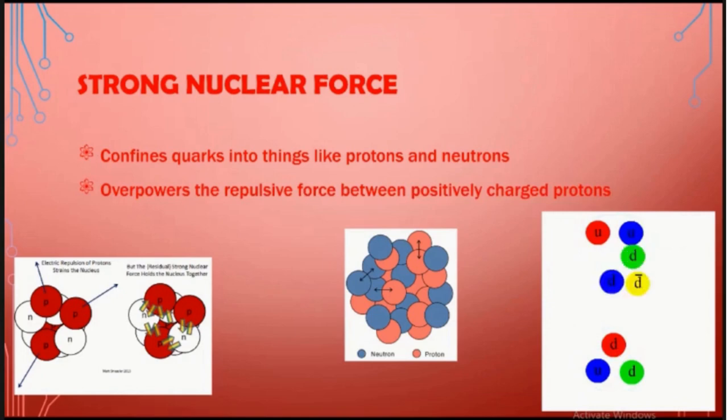Strong nuclear force also overpowers the repulsive force which is made by positively charged protons. That's how many protons can come together to make different elements, like for example nitrogen, which contains seven protons. The protons will all repel, but because of strong nuclear force, it actually overpowers this repulsion force and it helps the protons come together. Strong nuclear force is also known as strong interaction.